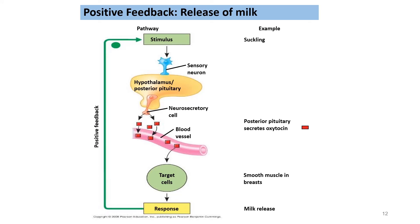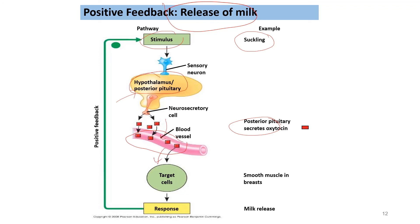Another example of positive feedback mechanism is the release of milk. The stimulus is sucking by the baby, which stimulates the hypothalamus, causing the posterior pituitary gland to secrete oxytocin into the blood vessels. The oxytocin moves via blood to the target cells — smooth muscle in the breast — causing the production and release of milk. That concludes the examples of positive feedback mechanism and the end of Chapter 3: Homeostasis. Thank you for listening.